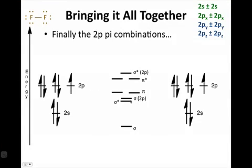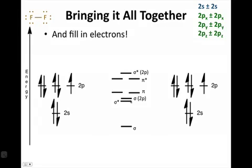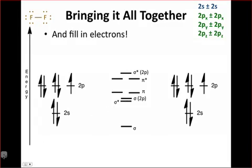Alright, so at this point we've looked at all of the possible combinations, and we've generated eight molecular orbitals out of the eight atomic orbitals. There's one more step, and that's simply filling in the electrons. We started with 14 electrons, and so we fill 14 electrons in the MOs.